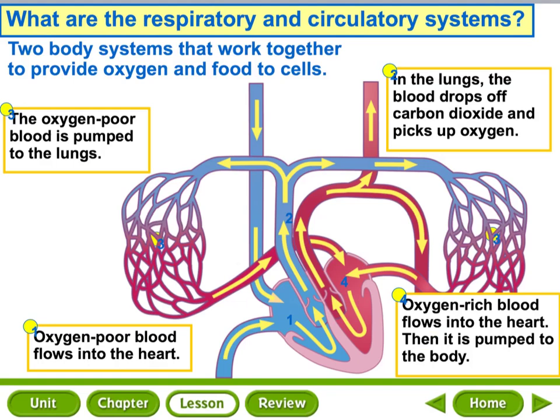There are open and closed circulatory systems. All vertebrates have closed circulatory systems because blood is carried in blood vessels. Arthropods, mollusks, and other invertebrates have open systems — in an open system, an animal's blood just moves around in an open cavity. If you have veins and blood vessels, you have a closed circulatory system. If you don't have blood vessels and it's just floating in your body, that's an open circulatory system.